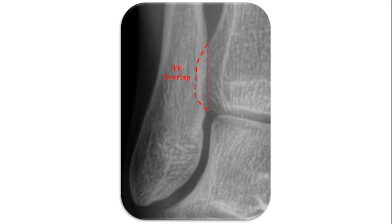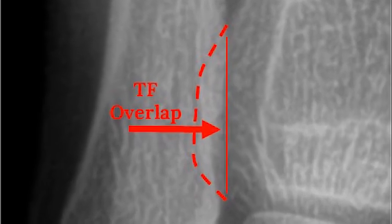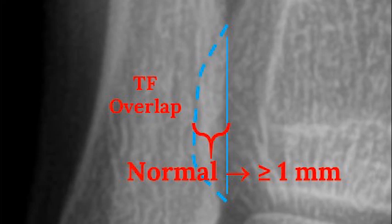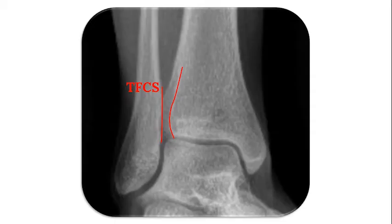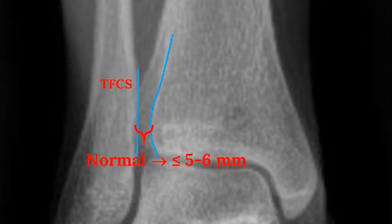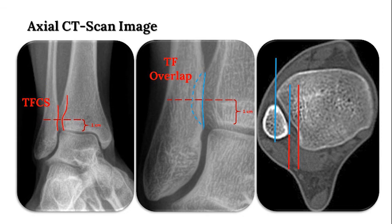The tibiofibular overlap is the radiographic overlap between the medial border of the fibula and the lateral border of the tibia, and gives an understanding of whether the syndesmosis may be malaligned. The tibiofibular clear space is the radiolucent area between the medial border of the fibula and the incisura fibularis. While the medial clear space, tibiofibular overlap, and tibiofibular clear space may appear normal with very subtle malalignment, overall these radiographic parameters are excellent measures for determining alignment of the mortise. This image demonstrates the tibiofibular overlap and clear space on a mortise x-ray as correlated with an axial CT scan reformat.